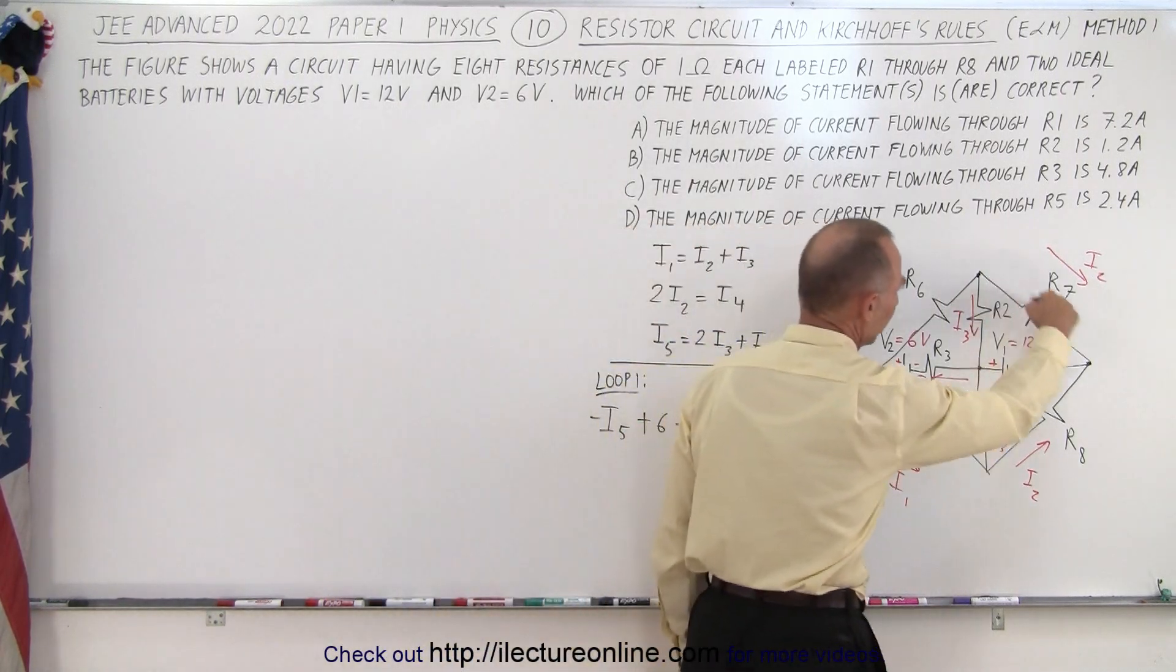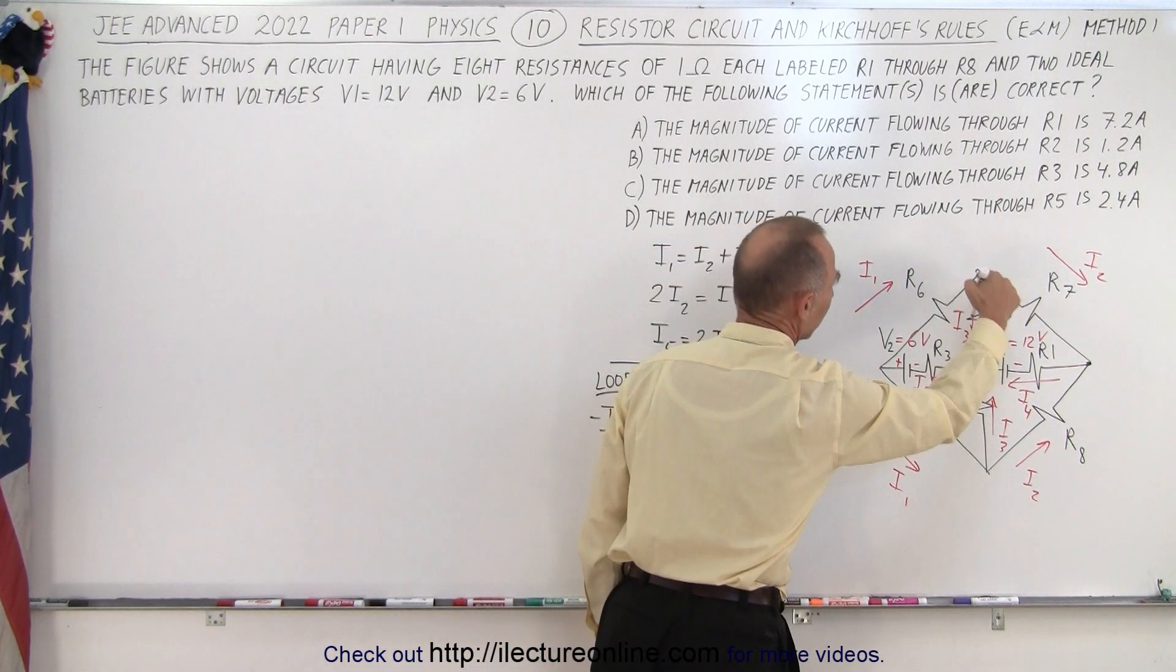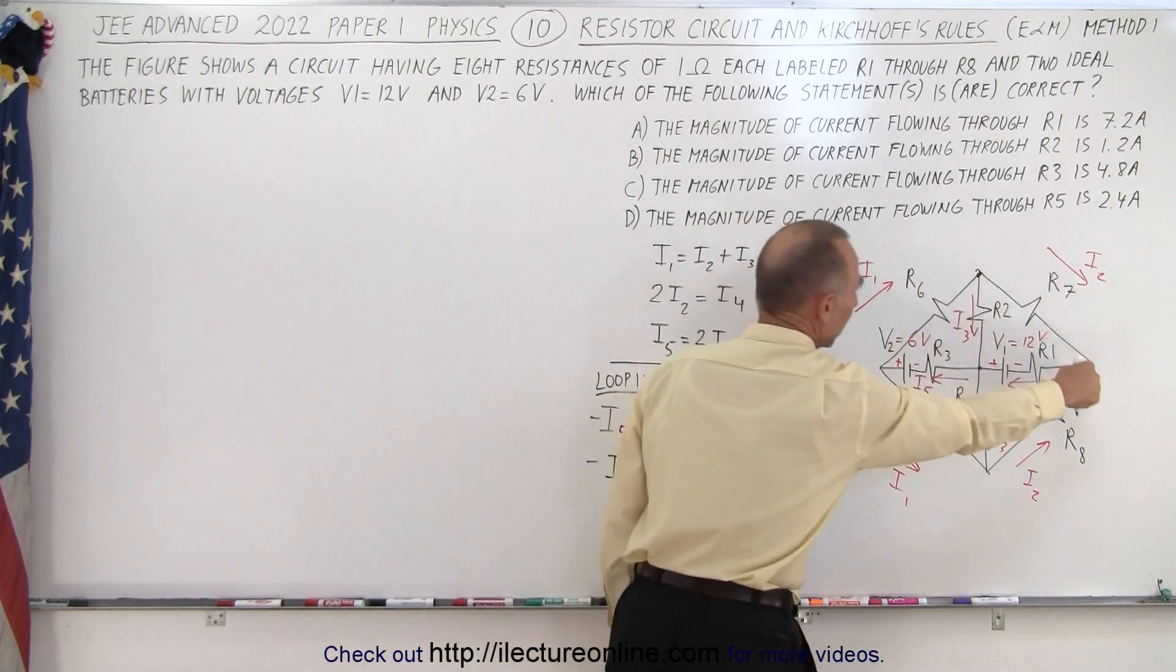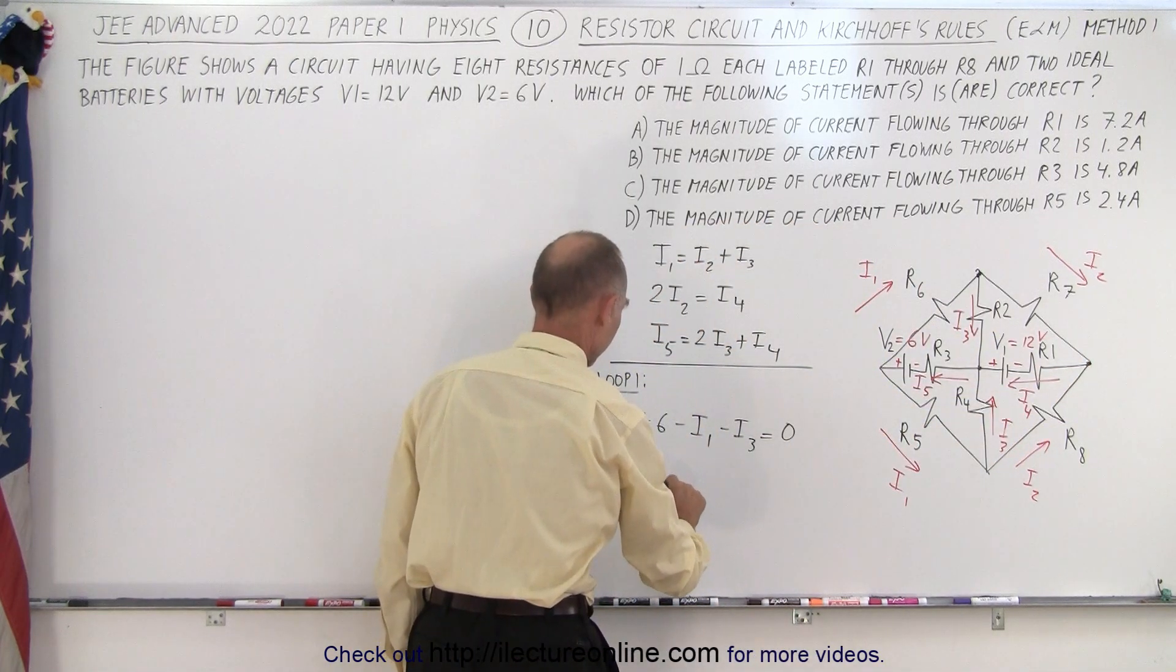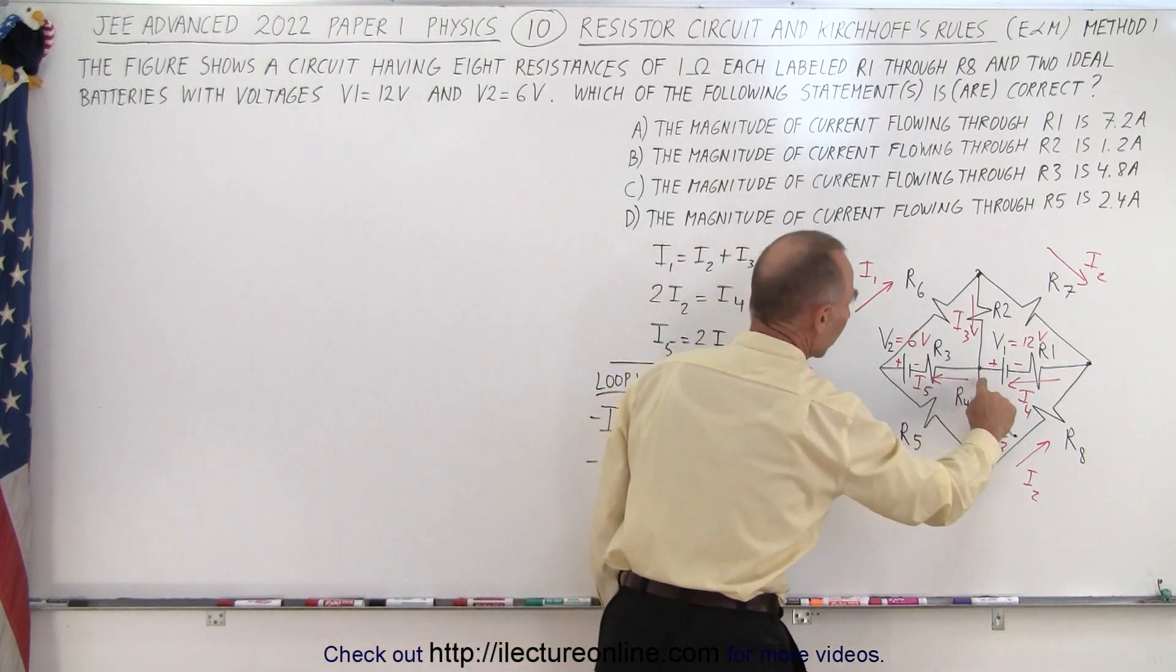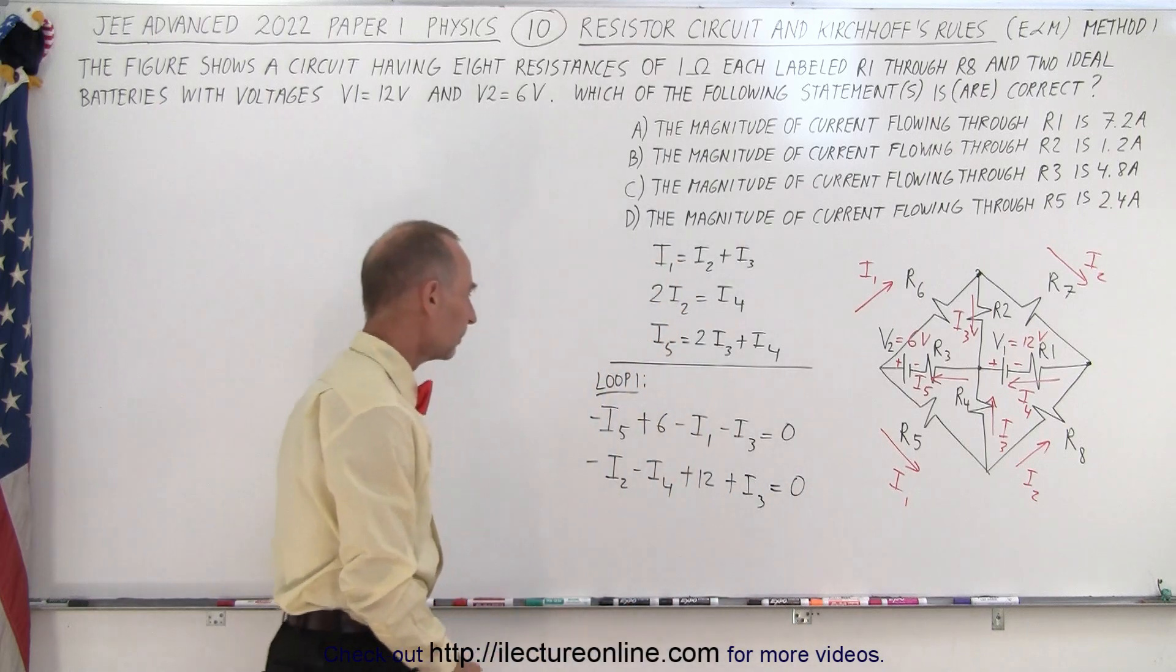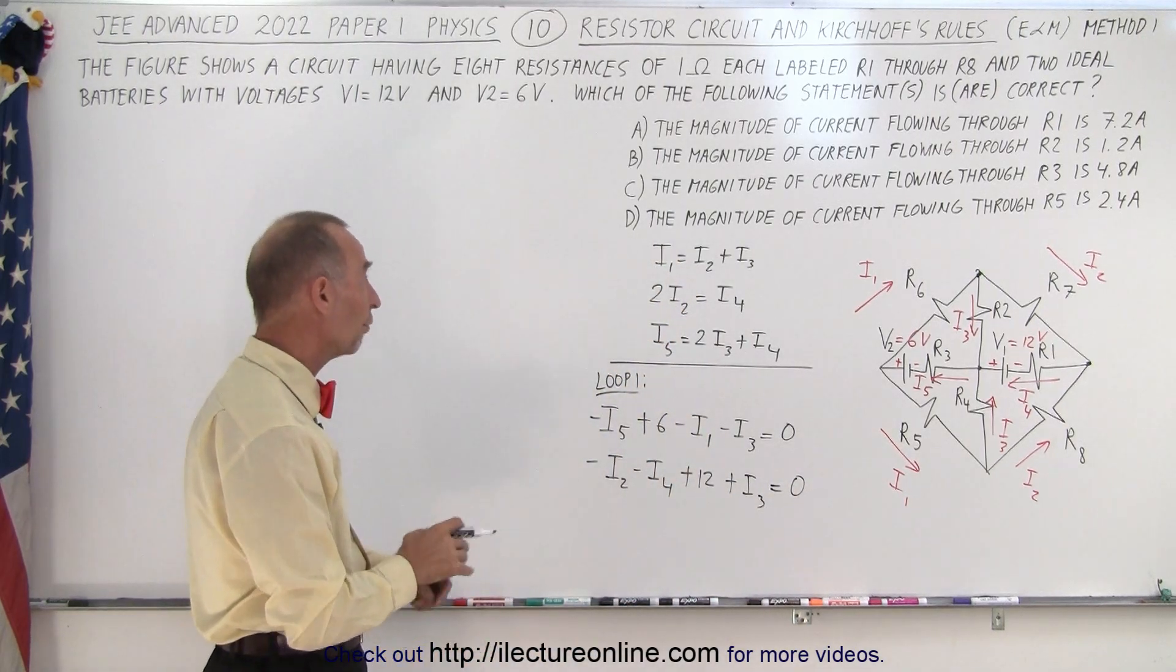We can do the second loop which is this loop right here. When we do that loop let's start from this point right there. We can come this way so we have a minus I2 voltage drop. Here we have a voltage drop that would be minus I4. Here we have a voltage rise plus 12. And then we go across this resistor against the current that has voltage rise plus I3. And that equals zero. Now we have five equations we should be able to solve for all five currents.